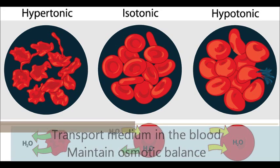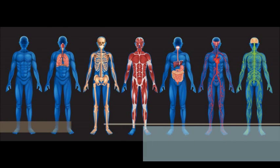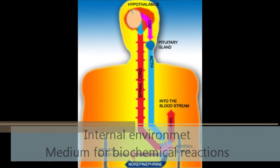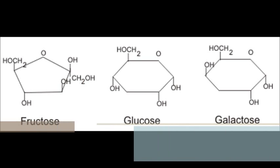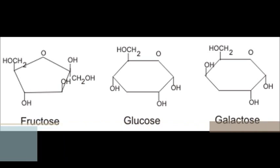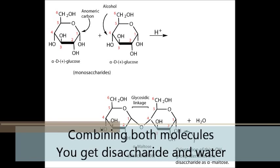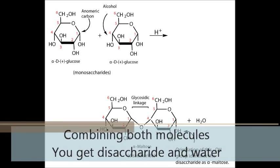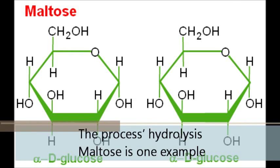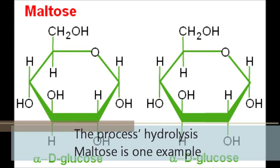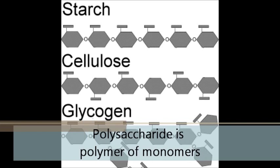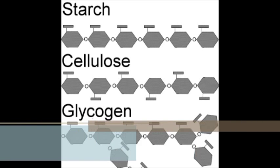Water maintains osmotic balance, internal environment, and serves as a medium for biochemical reactions. Monosaccharides are simple sugars — glucose and fructose are examples. Combining two molecules gives a disaccharide and water through condensation. Maltose is one example. Polysaccharide is a polymer of monomers.